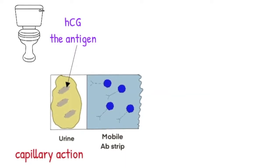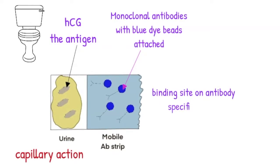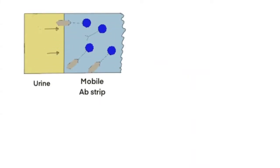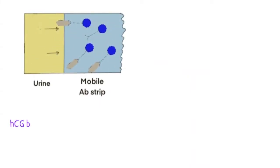First to be reached by the urine is the mobile antibody strip. The antibodies in the strip are free to move and have blue beads attached. The shape of the binding sites on the antibody are specific to the HCG molecule. Any HCG molecules in the urine therefore bind to some of the mobile antibodies, forming an HCG antibody complex.